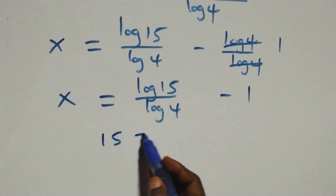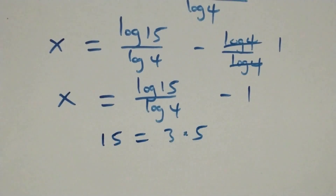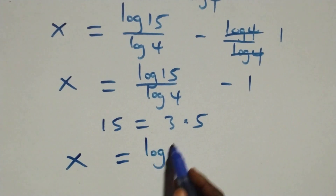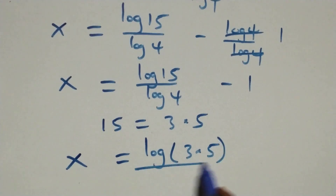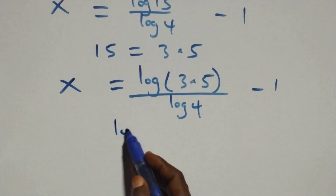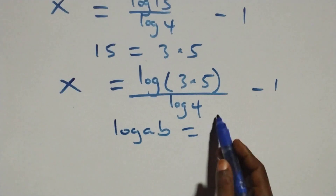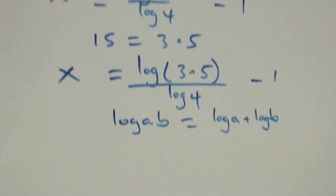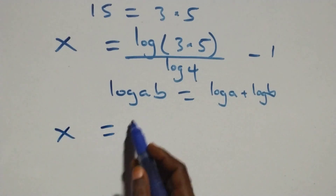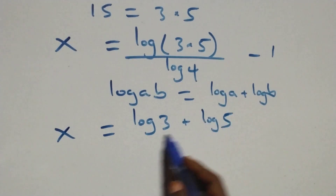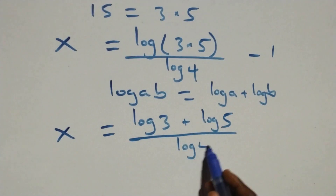We can write 15 as 3 times 5. So x equals log(3 × 5) over log 4 minus 1. This follows the law of logarithms: log(a × b) is the same thing as log a plus log b. So we have x equals (log 3 plus log 5) over log 4 minus 1.